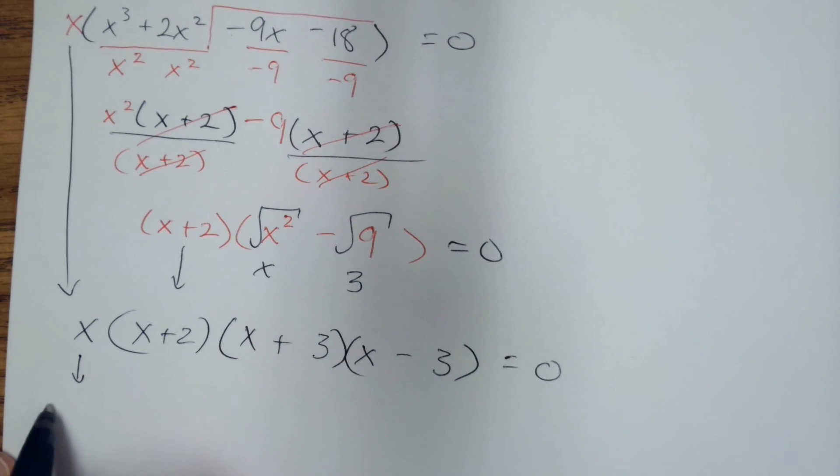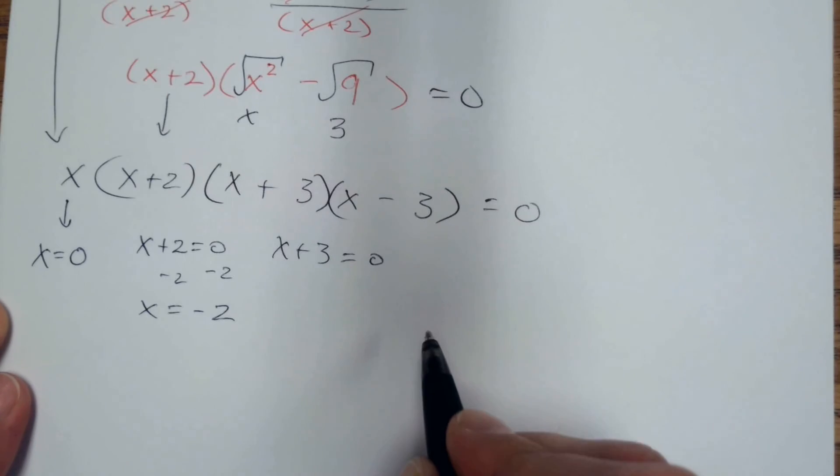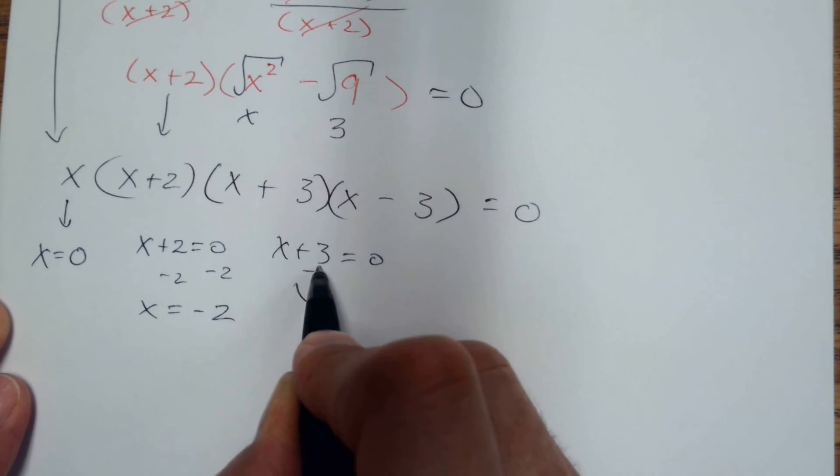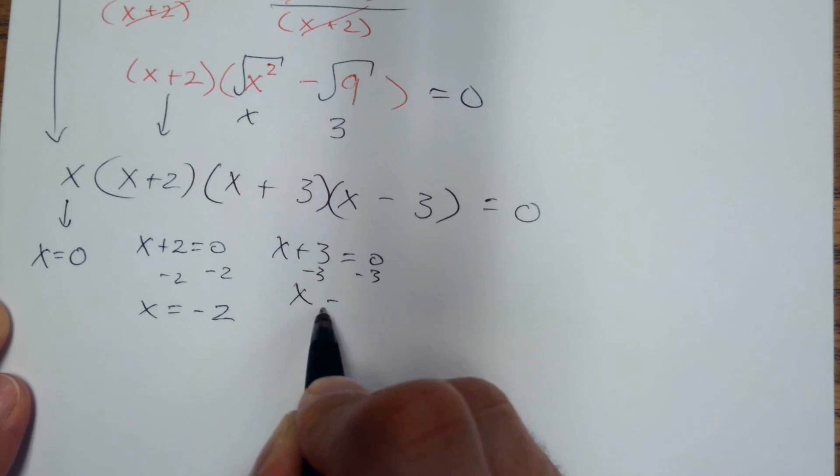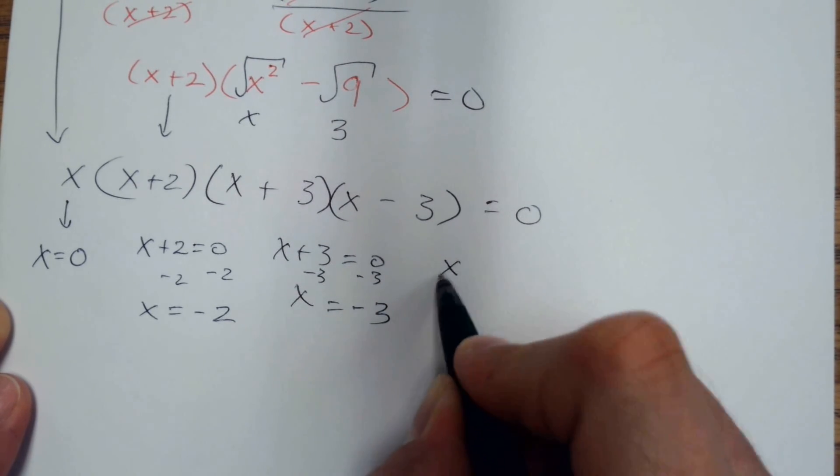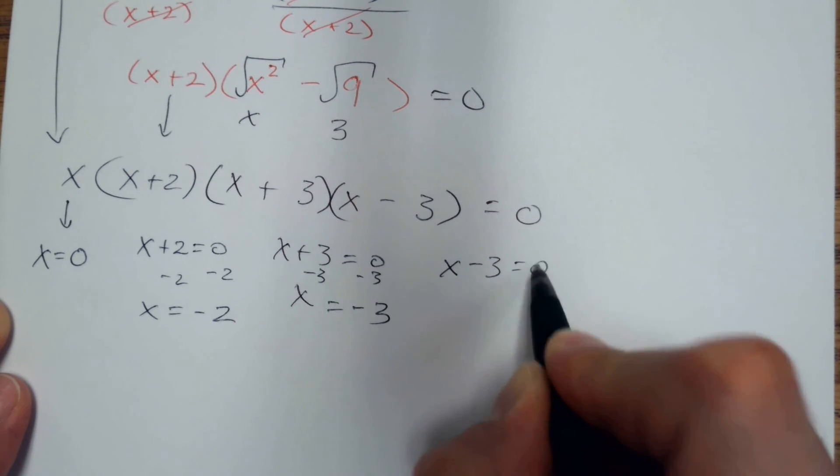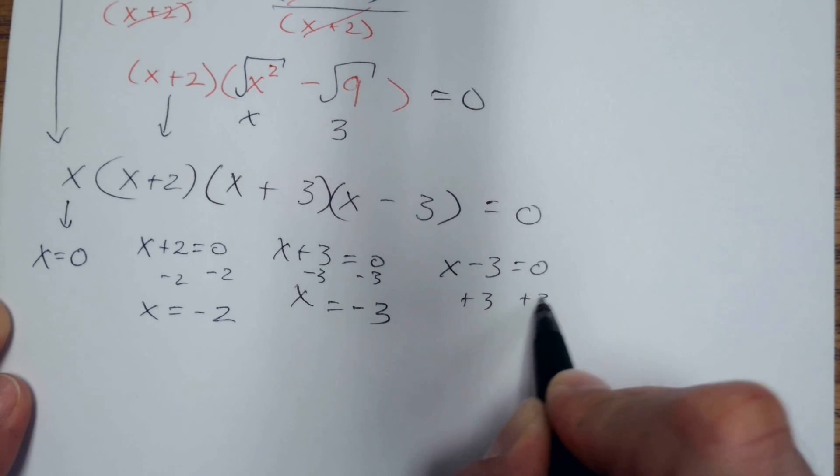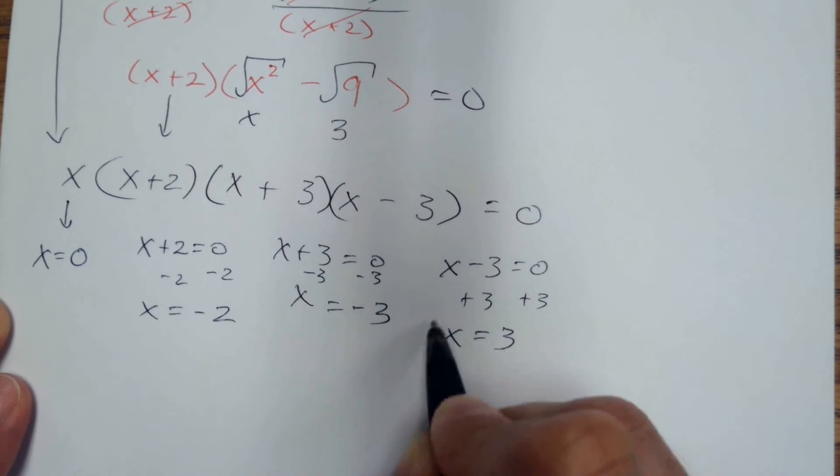If I set this x equal to 0, I get x equals 0. x plus 2 equals 0, I get x equals negative 2. x plus 3 equals 0, I get x equals negative 3. And then x minus 3 equal to 0, x equals 3.